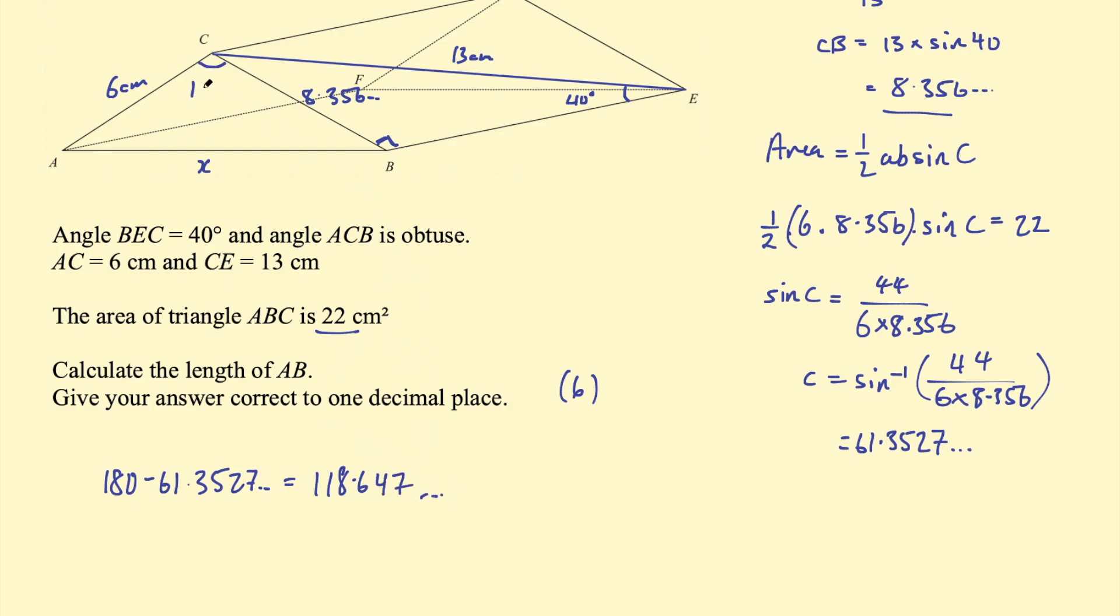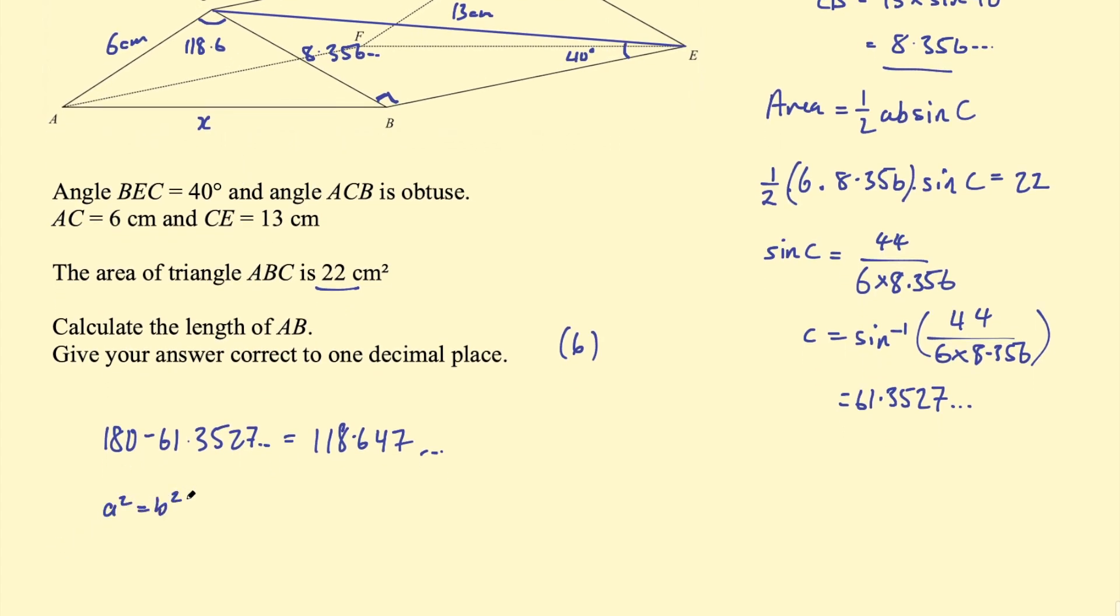Okay, now we have this angle, approximately 118.6. Now we can use the cosine rule to find x. So the cosine rule says a squared equals b squared plus c squared subtract 2bc cosine a. So a in this case is AB, this length. So AB squared equals 6 squared, this length, plus c squared, the other adjacent length to the angle, so 8.356 squared, subtract 2bc cosine a. So 8.356 squared, subtract 2 times those lengths, and this is multiplied by the cosine of a, which is the angle we just found, so cosine of 118.647.